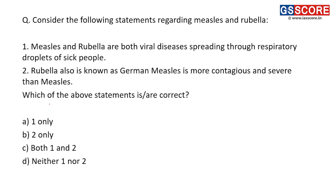Next question: consider the following statements regarding measles and rubella. First statement: measles and rubella are both viral diseases spreading through respiratory droplets of sick people — this is a correct statement. Both are viral diseases and both spread through respiratory droplets.